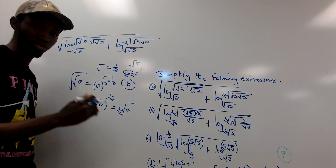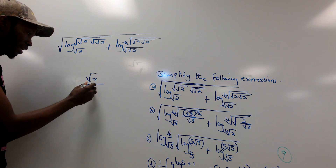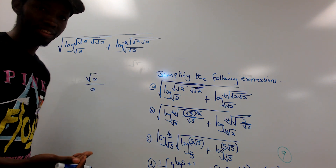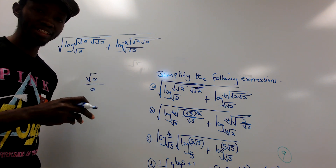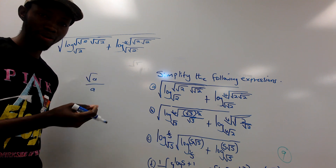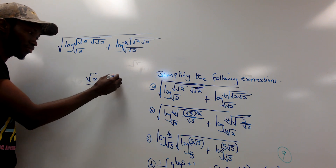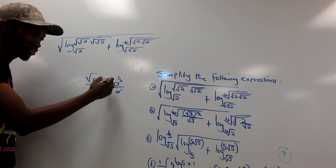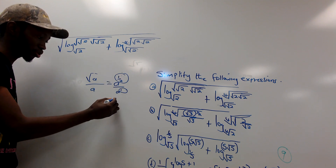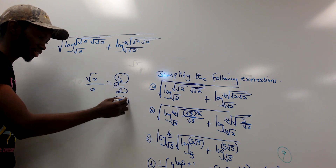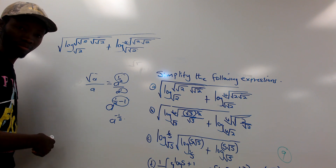Another basic principle: if we have the square root of a divided by a, when bases are the same you take one base and subtract the powers when dividing, or add the powers when multiplying. Here, the numerator power is half minus the denominator power of 1, giving a negative result — specifically a raised to negative one-half.